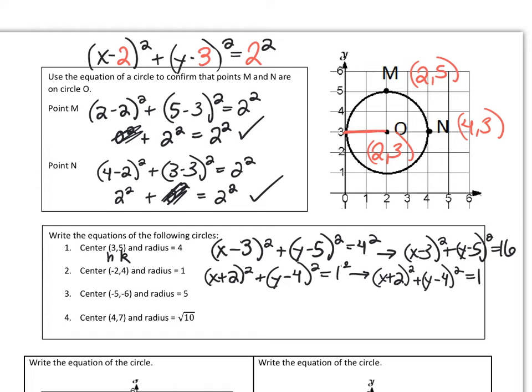Did you notice on this next one that we ended up with x plus 2 squared? That's because when you subtract a negative 2, that's the same thing as adding 2. So that's why we have x plus 2 squared in this equation. And of course, 1 squared is just 1.